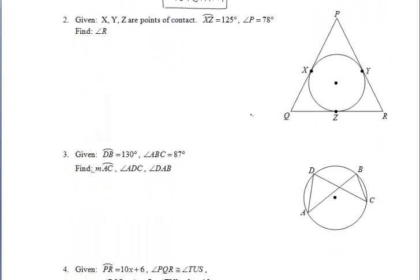For number 2, we're given those points of contact, so right away, I'd be thinking about the tangent-tangent angle and its intercepted minor arc. So, we have this arc here, XZ, which they tell us is 125 degrees, and we also know that angle P is 78 degrees. But remember, we have that tangent-tangent angle, the red one, and its minor arc that's intercepted. So, that red angle and the yellow arc must add up to 180 degrees. So, we get that that angle is 55 degrees,